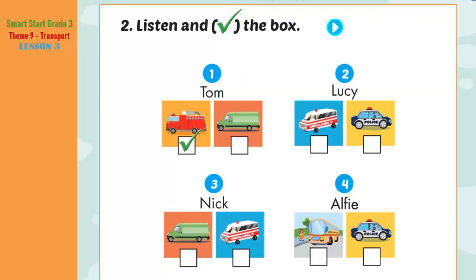B. Two. Listen and tick the box. Look at the pictures. Listen. There is one example. One. Hi, Grandma! Hi, Ben! We went on Alfie's spaceship! Wow! What did you see, Tom? I saw a red fire engine. Can you see the tick? This is an example. Now listen and tick the box. Two. What did you see, Lucy? I saw a blue police car.